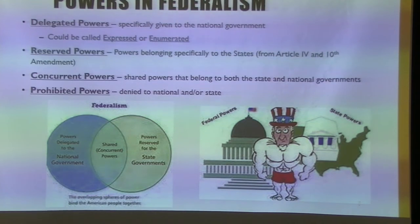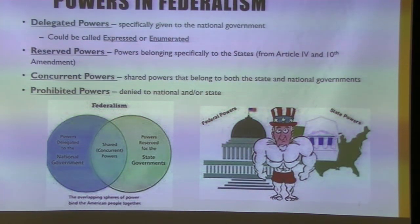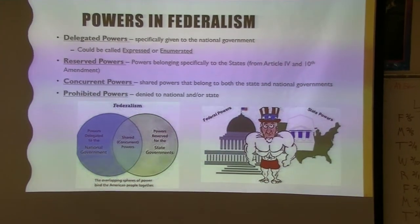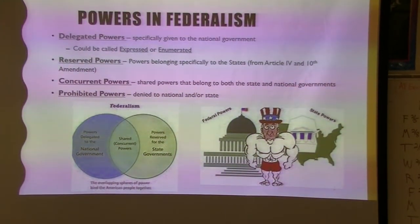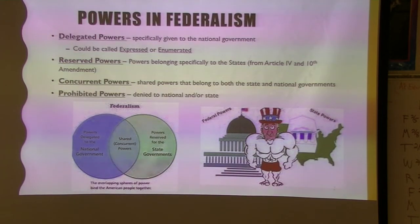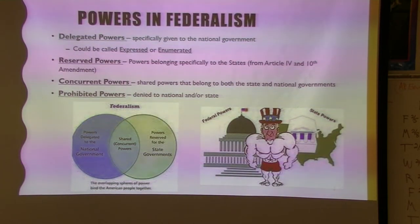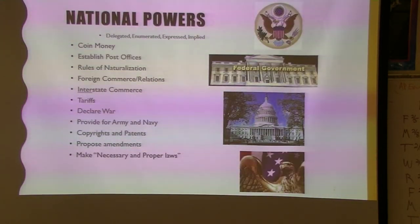Delegated powers are those specifically given to the U.S. government. These can be enumerated, implied, or expressed. Reserved powers are the powers of the states. Concurrent powers are shared powers. Prohibited powers — that's pretty easy. You'll see a lot of different Venn diagrams showing this.